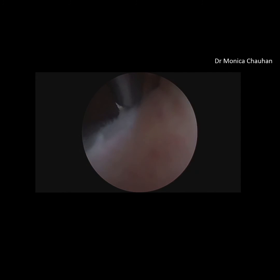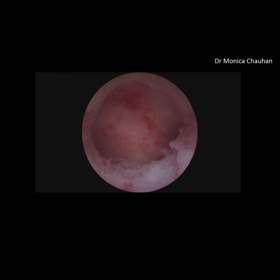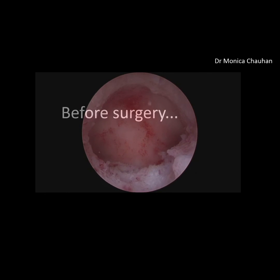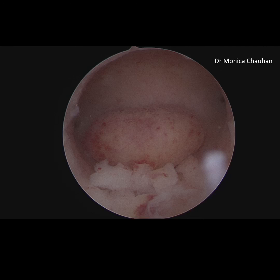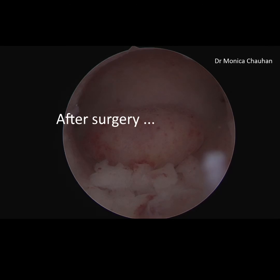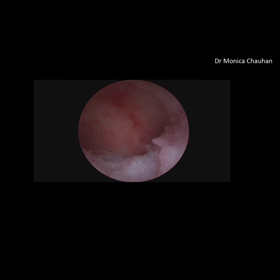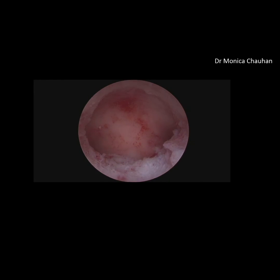By resecting from the base, we are able to achieve a normal looking uterine cavity, which you will be seeing. The patient is relieved of her symptoms. Before the surgery the polyp occupied the uterine cavity; after the surgery a normal uterine cavity is restored.